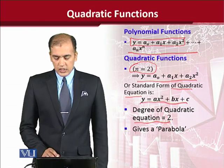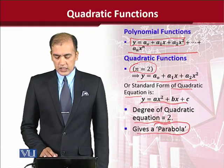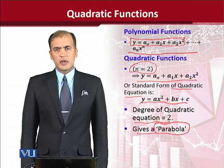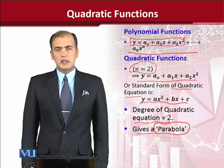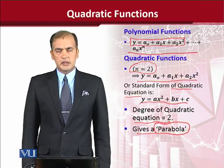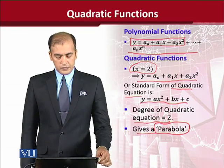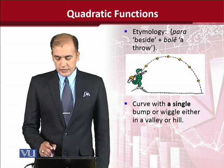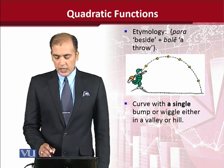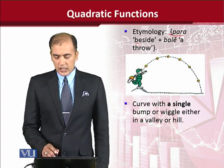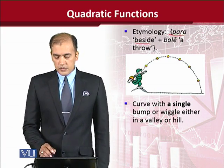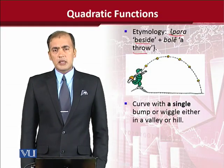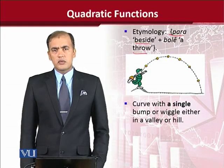Now we come to the graph of the quadratic function, and you will see that it gives us a parabola. We need to understand what this word means. During the etymology of this word, 'para' means beside and 'bola' means throw — so it is something related to throwing.